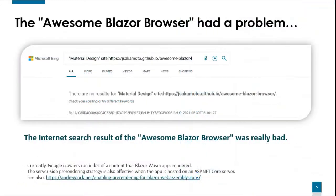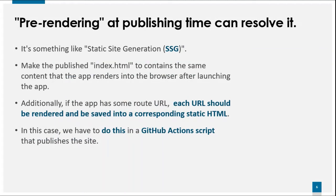But it has a problem. As you can see in this slide, the internet search results of the Awesome Blazor Browser were really bad. If I hosted it on an ASP.NET Core server, I could resolve this easily using the usual server-side pre-rendering technique. But I strongly wanted to host it on GitHub Pages, because this is a good showcase that a Blazor web app can be hosted even on static web hosting. So I had to do pre-rendering at publishing time and save them to static HTML files in the publish folder.